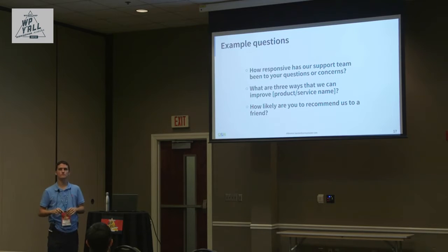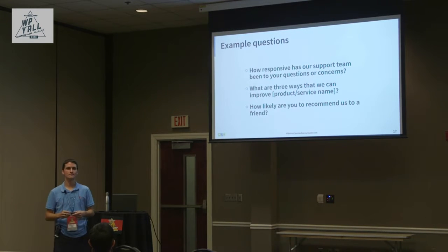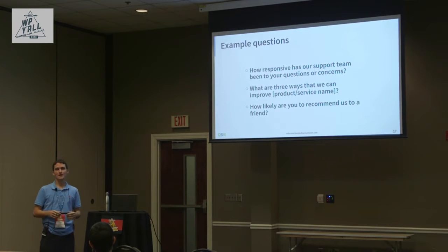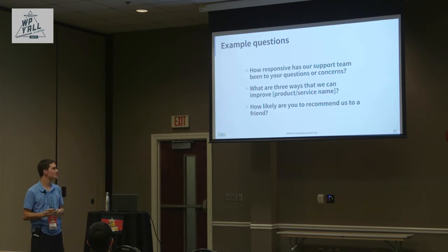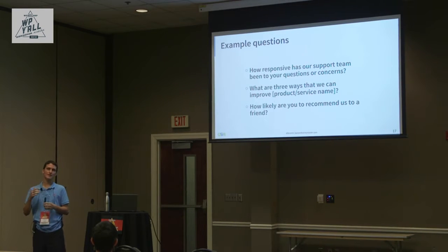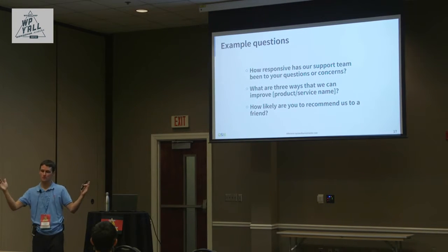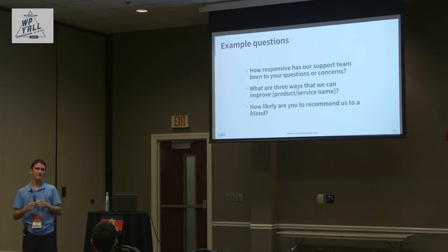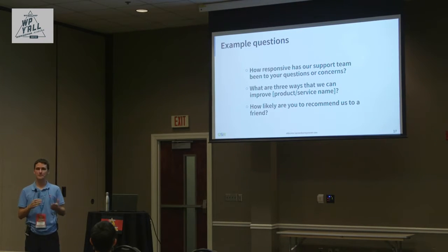An audience member asked: is there research on whether a 5-point or 10-point rating scale is better? The research is mixed — some say fewer options reduce random clicking, others say the 1-10 scale is so common that people inherently know what the numbers mean. There's no clear standard, so I can't definitively recommend one over the other.